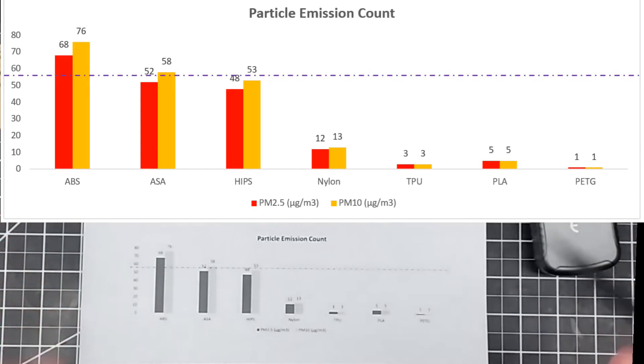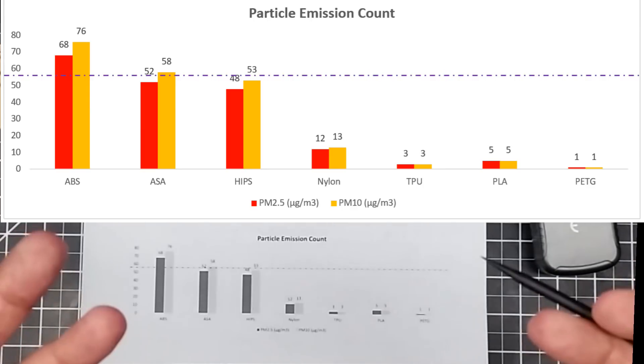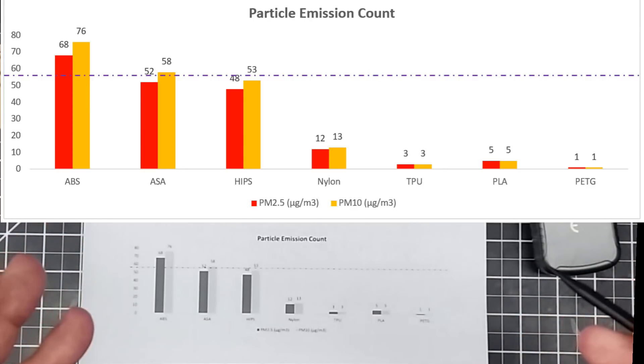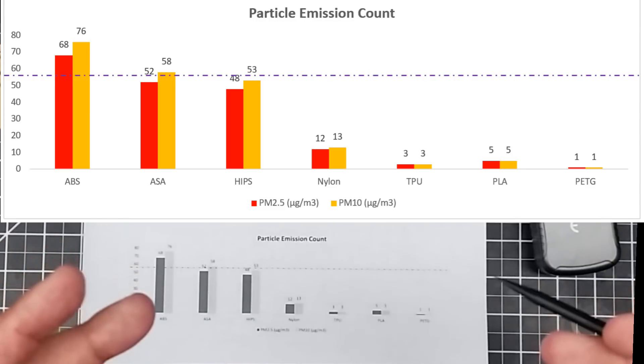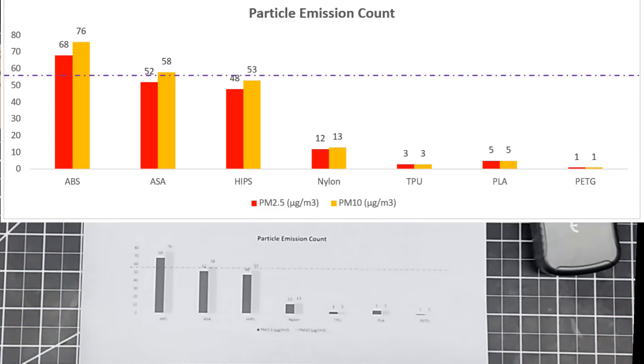So one of the newer plastics, and actually, I did not plan on testing this, but I had a number of requests, is ASA, which is a bit of a cousin to HIPS and ABS. I found ASA a very interesting plastic to work with mechanically, and I will work with it more.